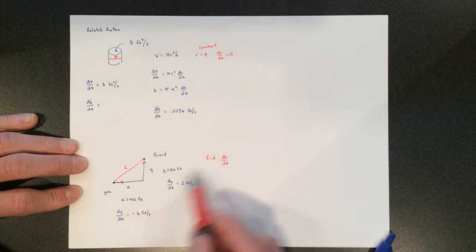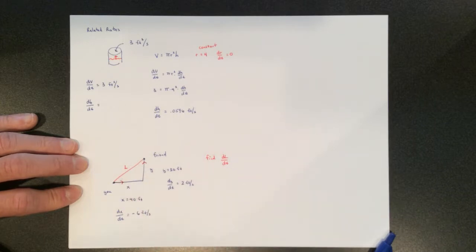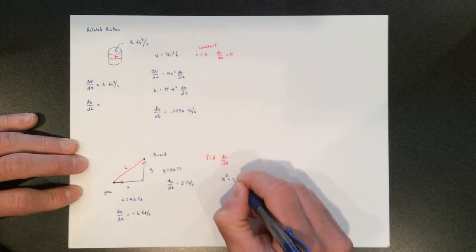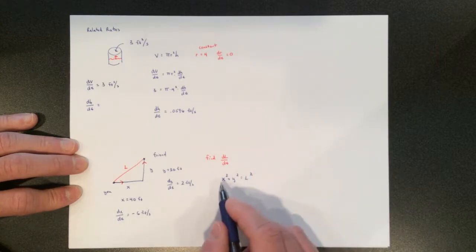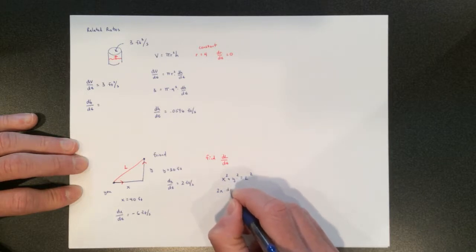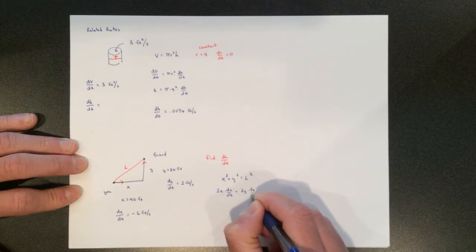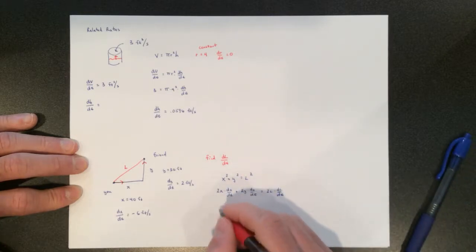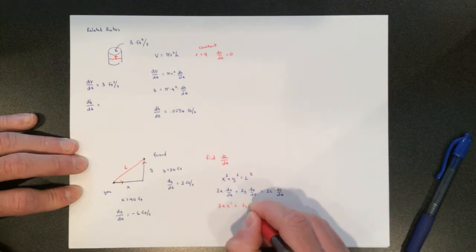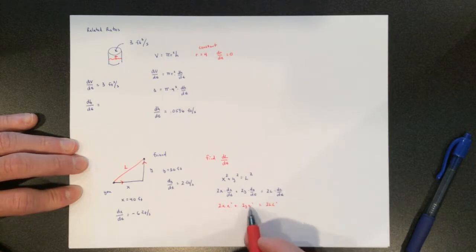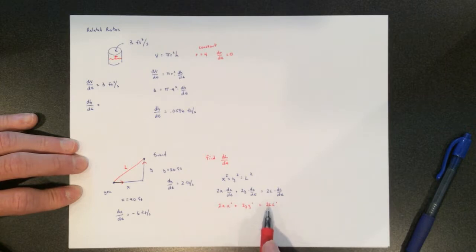We need a relationship between x, y, and l. By the Pythagorean theorem: x² + y² = l². Since all three are functions of time, we take the time derivative to get: 2x(dx/dt) + 2y(dy/dt) = 2l(dl/dt). Some textbooks write this as 2x·x' + 2y·y' = 2l·l', where the primes represent time derivatives — just be careful since y' sometimes means dy/dx instead.